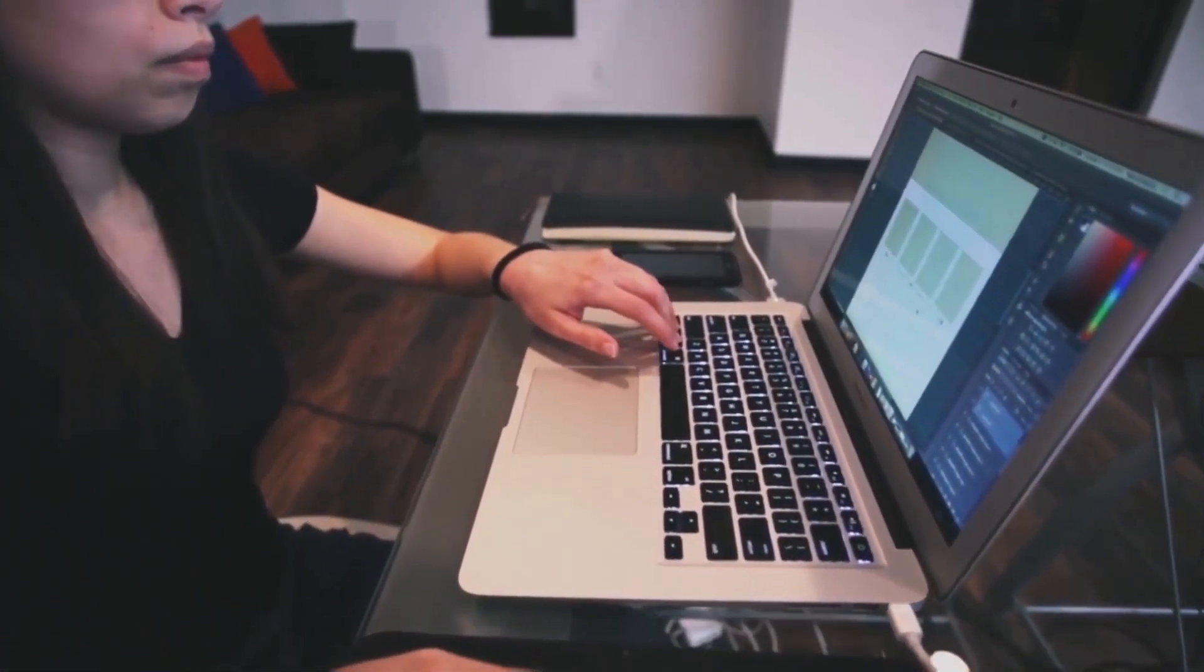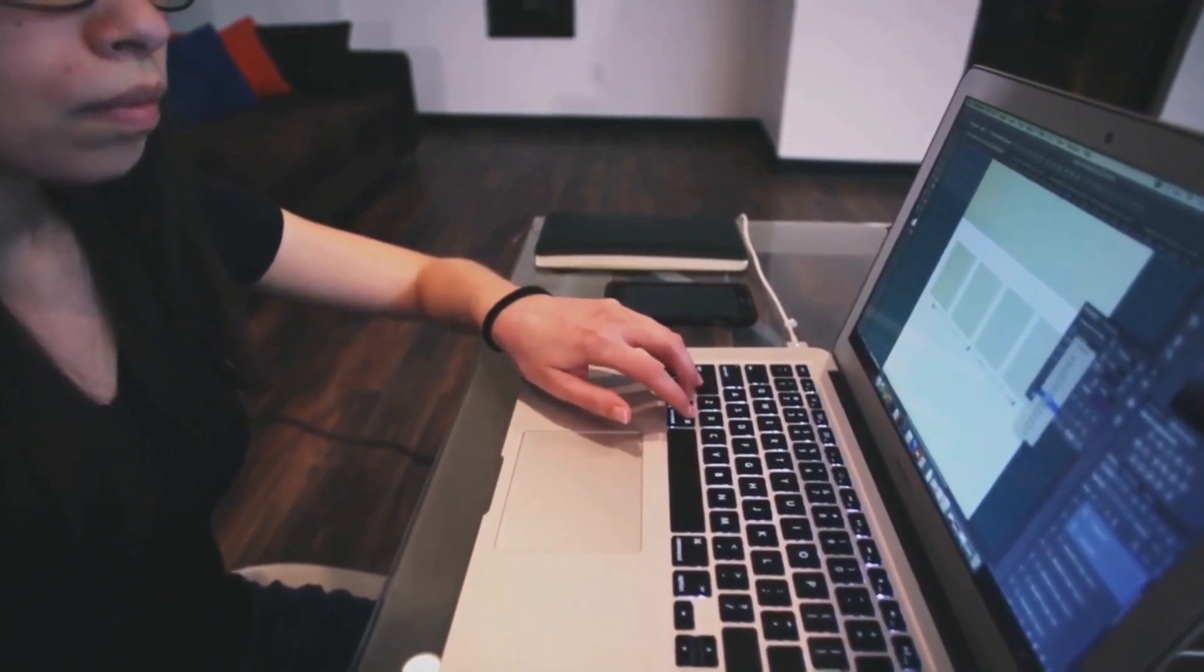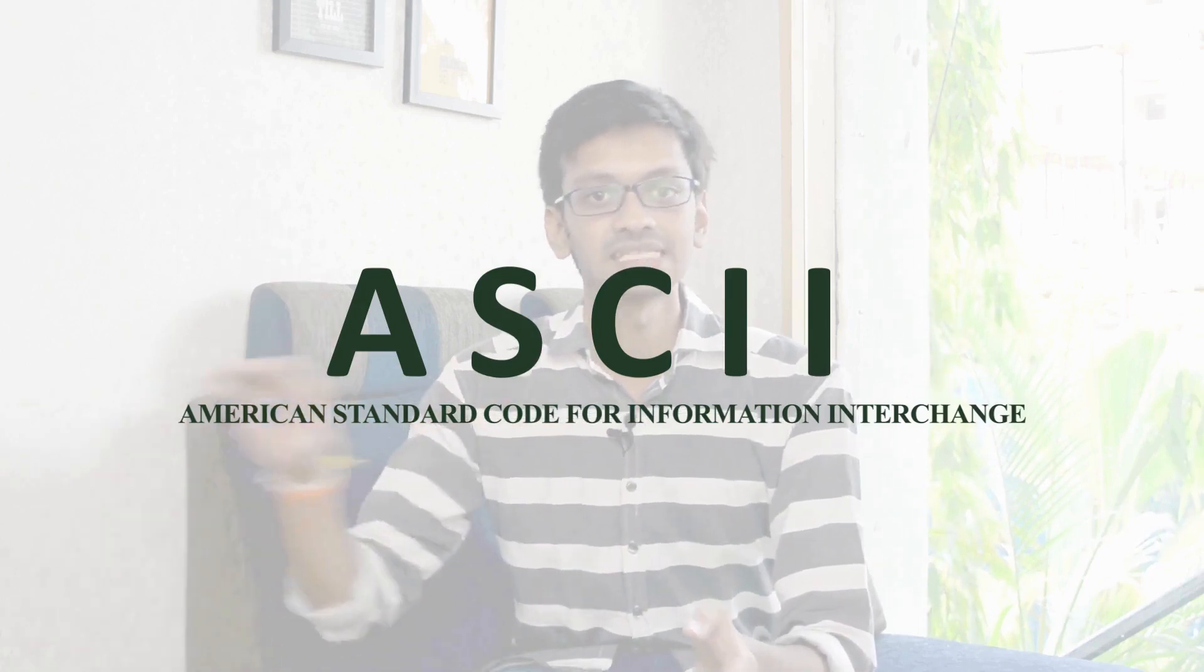If you are here for very basic content, you can go check out other courses. After that, you can continue watching this lecture. Before digging further, let's try to understand how computers interpret programming languages. Every value is associated with a particular code called ASCII, American Standard Code for Information Interchange.